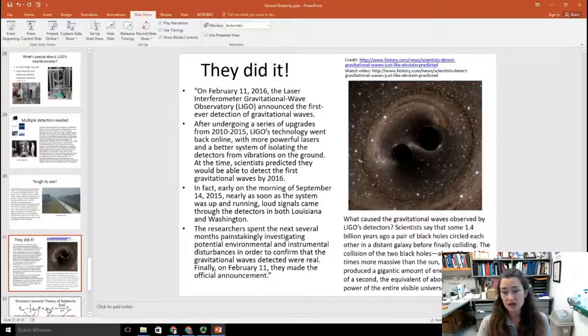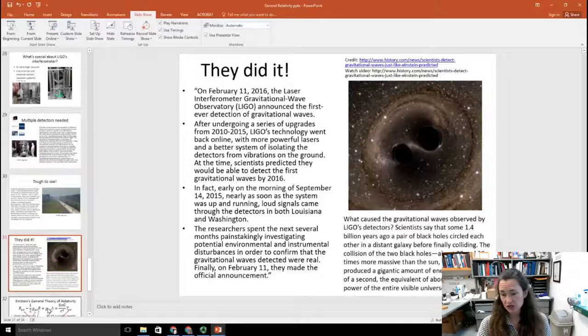So what caused the gravitational waves that were observed? Well, scientists believe now that about 1.4 billion years ago, a pair of black holes were circling each other in a distant galaxy. And then they finally collided. And these two black holes have masses of about 29 and 36 times more massive than the Sun, respectively. And they produced a gigantic amount of energy when they collided in a fraction of a second. About 50 times the power of the entire visible universe is the amount of energy that it put out. And boom, we got to see it. So that was amazing. Way to go, science.